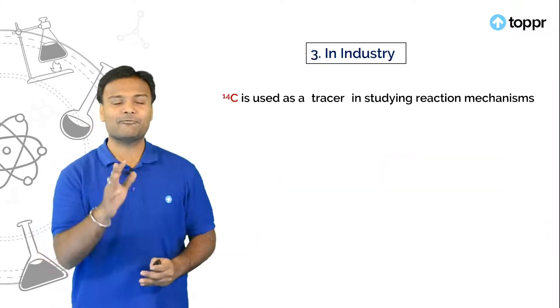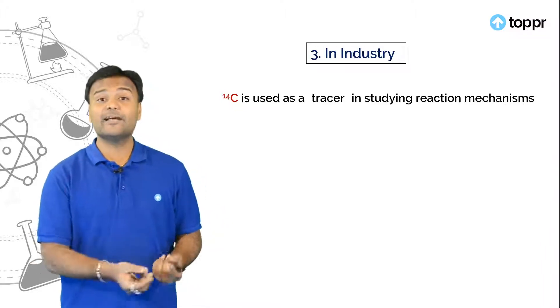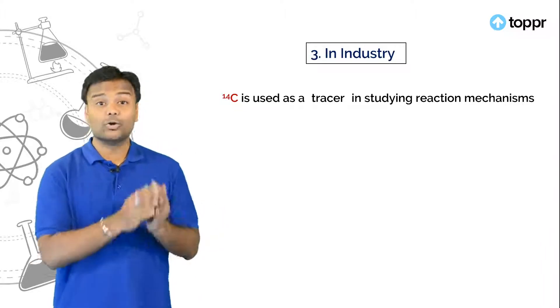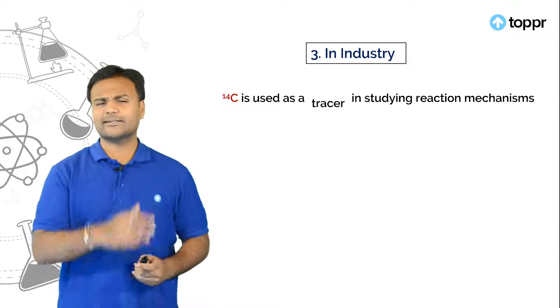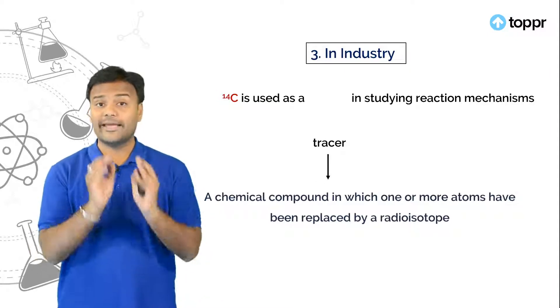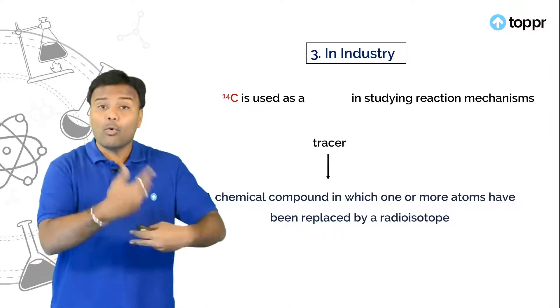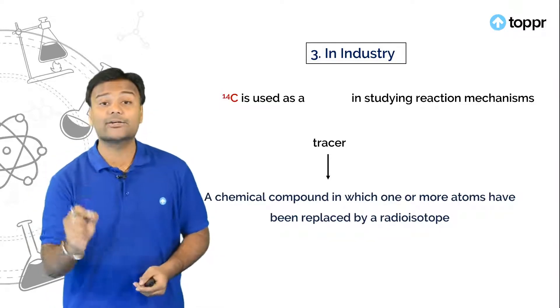In industry carbon 14 is the main radioactive element. Where we are using it as a tracer to understand the mechanisms of a reactions. What is a tracer? Tracer is a chemical compound in which one or more than one element are replaced by a radioactive element.